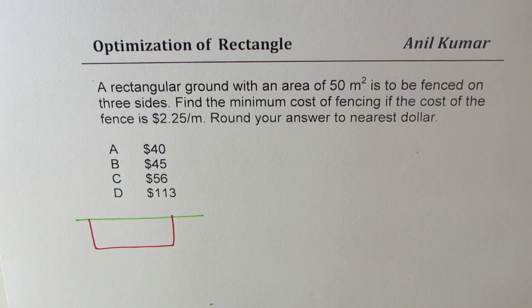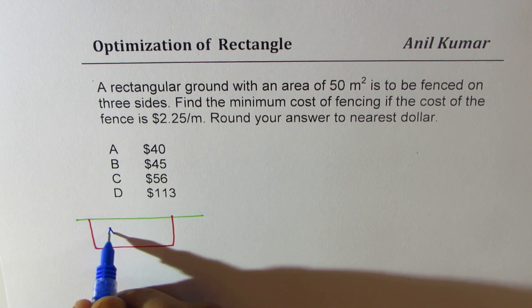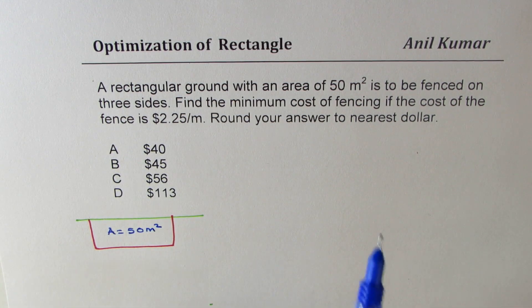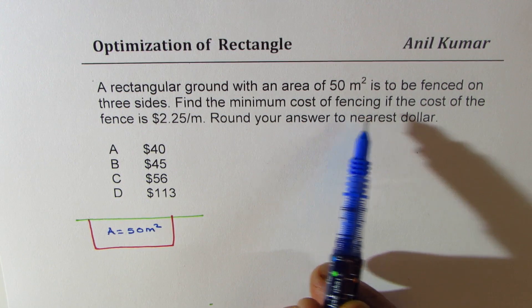We are given that the area enclosed is 50 meters squared. Now we need to find the minimum cost of fencing.